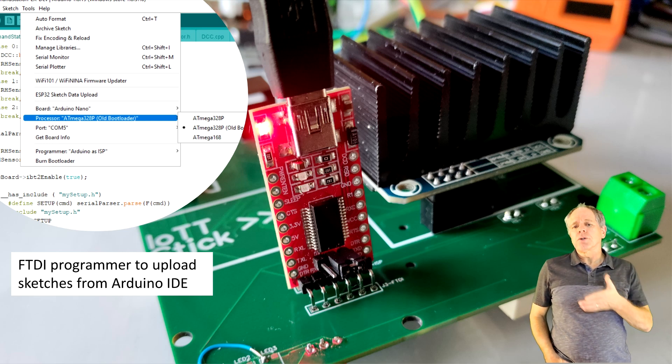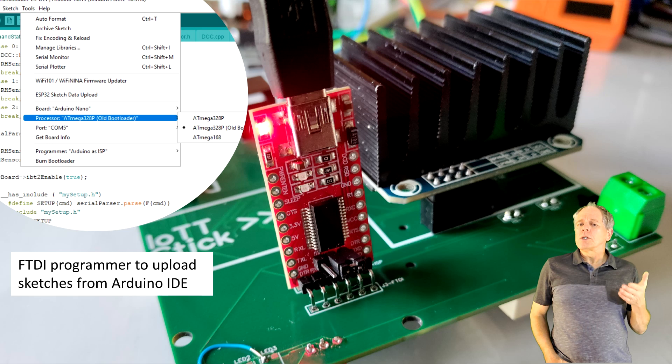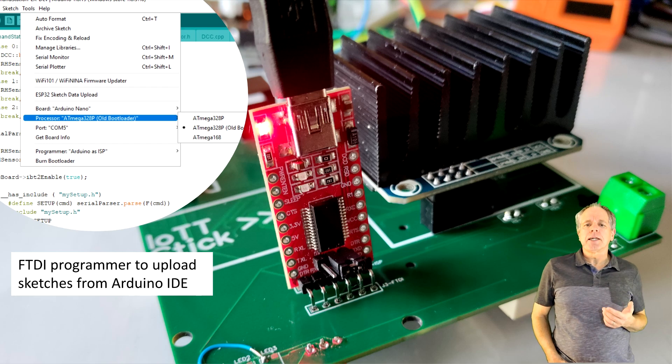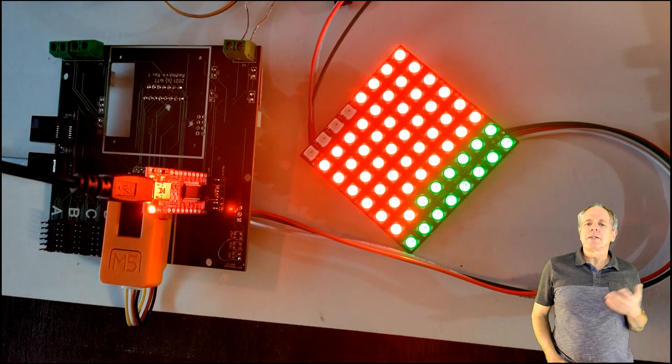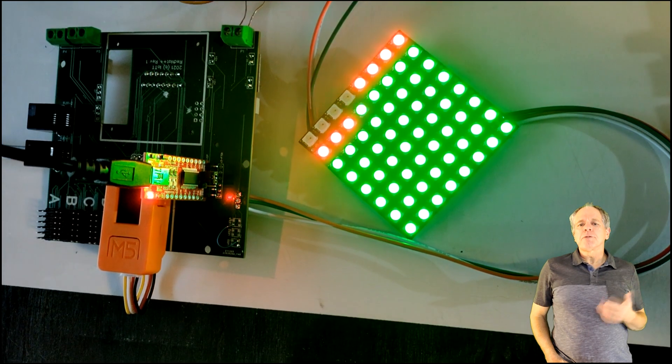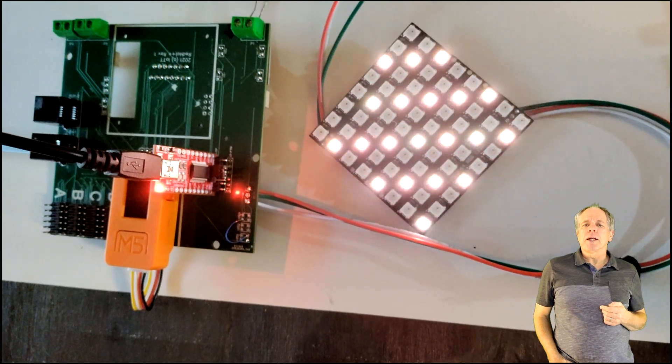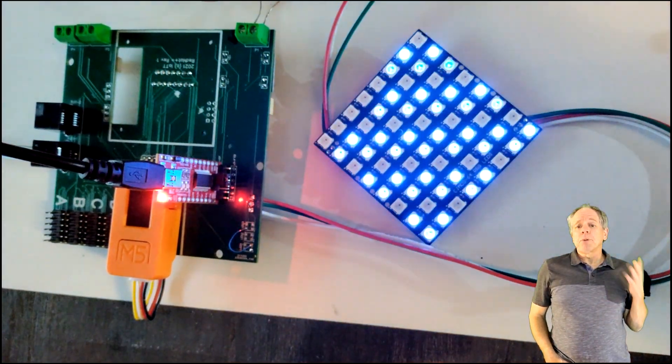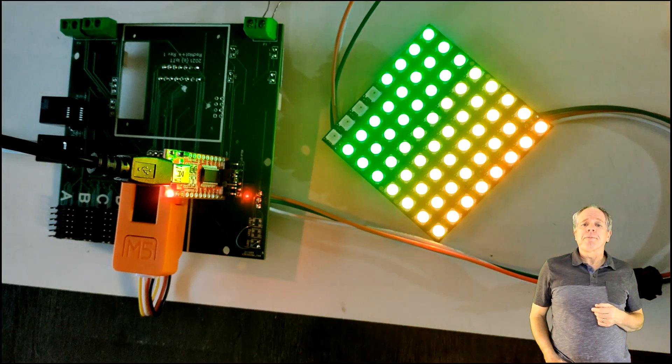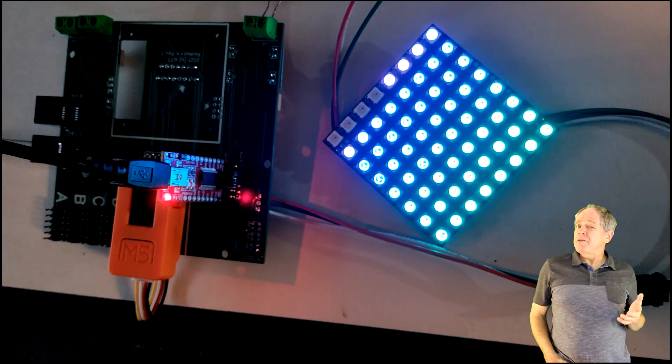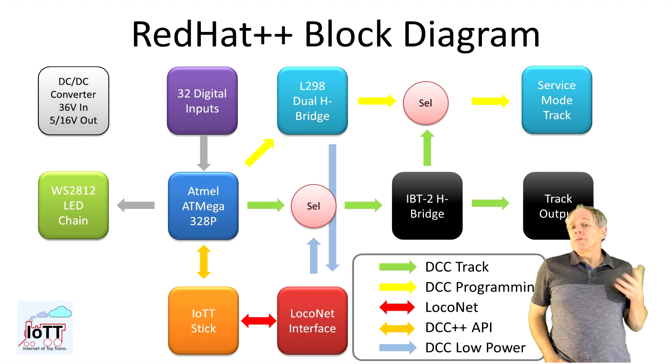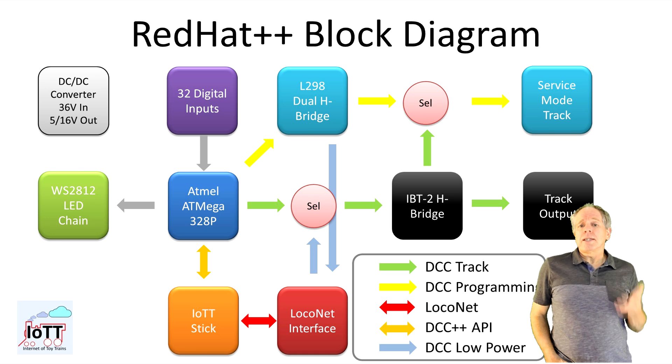So I can use the same process to program the ATmega328P you are used to from the Arduino Uno or Nano. I simply selected Arduino Nano with the old bootloader and was able to load a simple sketch like the typical strand test sketch for WS2812 LEDs and run it from the 3.3V or 5V power supplied by the FTDI programmer. Proof that the processor on the board is running.